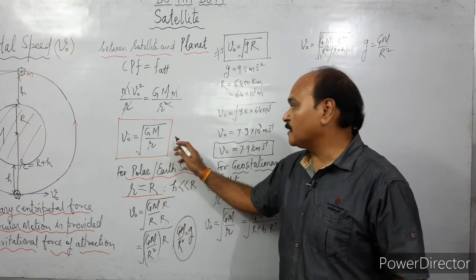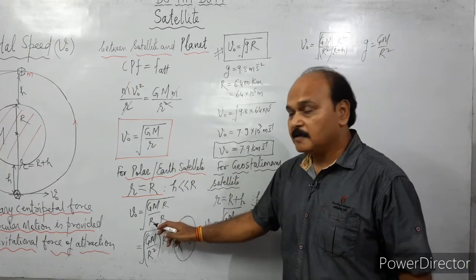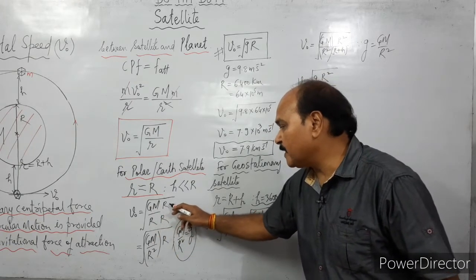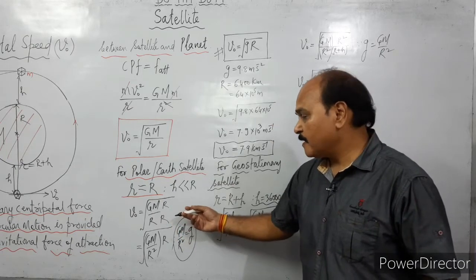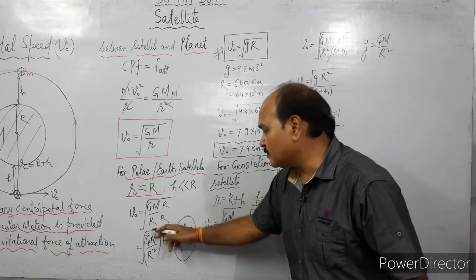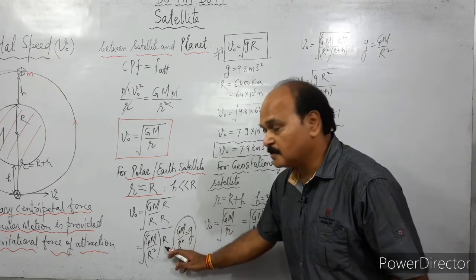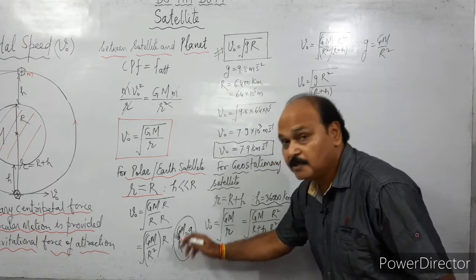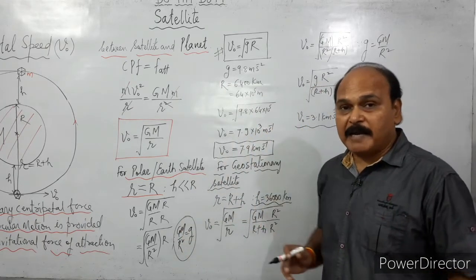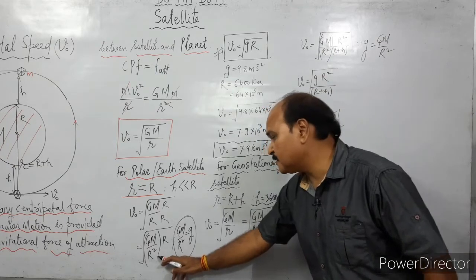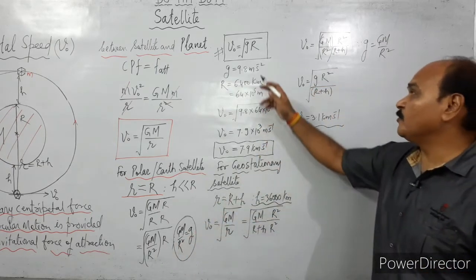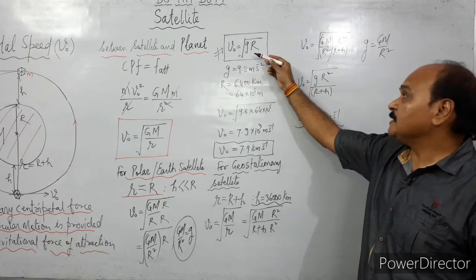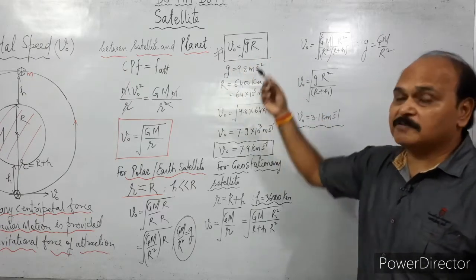So we get √(GM/R). Within this square root, we multiply by R and divide by R. The first term becomes GM/R², which is acceleration due to gravity over the surface of the planet, and the second term is R. So if we write g for this and R as it is, orbital velocity is √(gR), where g is acceleration due to gravity and R is the radius of the planet.